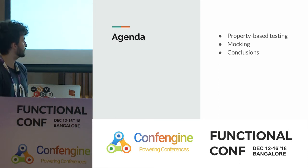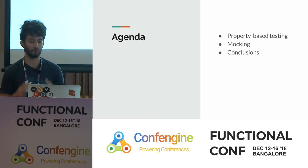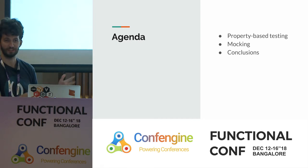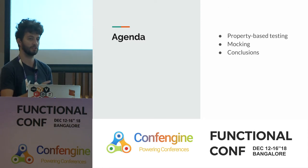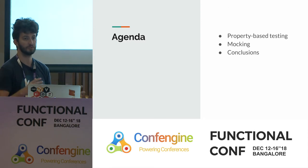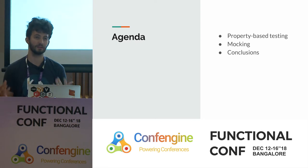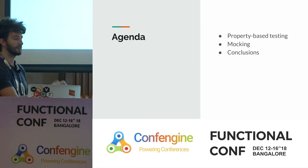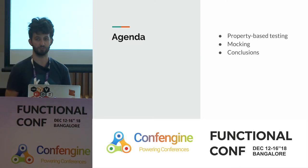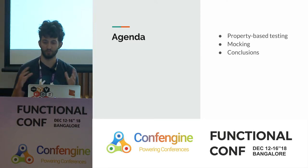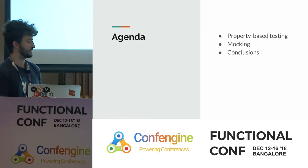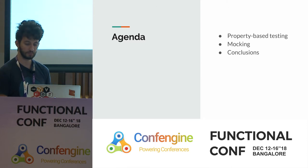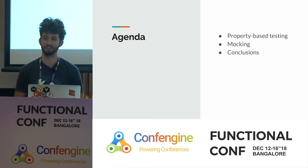Let's look at the agenda. I'm going to talk about only two things and a conclusion. The first thing is property-based testing, because it really helps get more confidence in your tests. The second thing is mocking in functional programming — it's a bit different from how you might mock in Java. And at the end we'll try to find some conclusions.